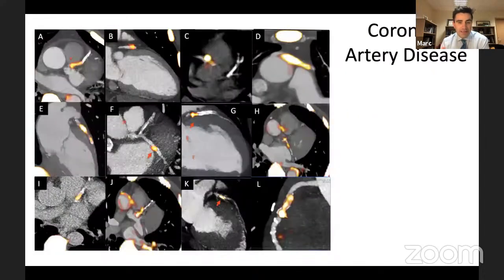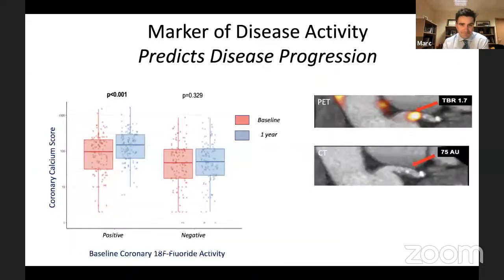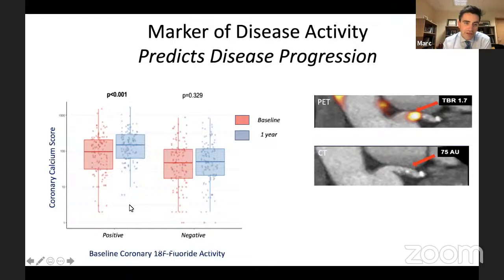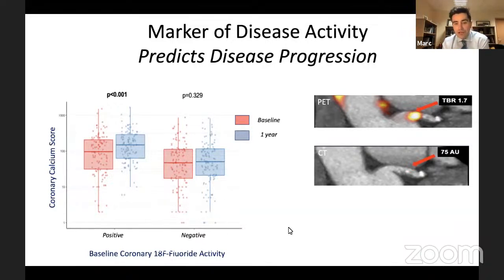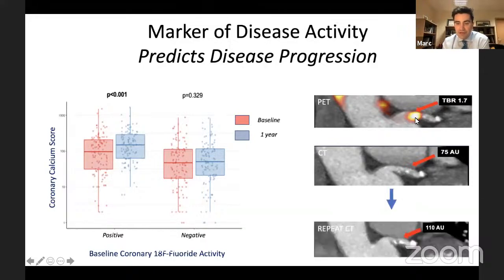In the coronary arteries, we can see uptake of the tracer and localize it to specific areas and individual lesions. Like in other systems, it works as a marker of disease activity and predicts disease progression. Patients with sodium fluoride-positive plaques demonstrate an increase in their calcium score at one year, while patients without fluoride activity show no increase. At the plaque level, a positive plaque in the LAD with high fluoride activity at baseline shows progressive calcification on repeat scanning.